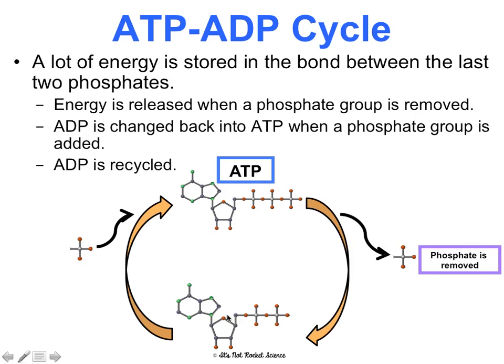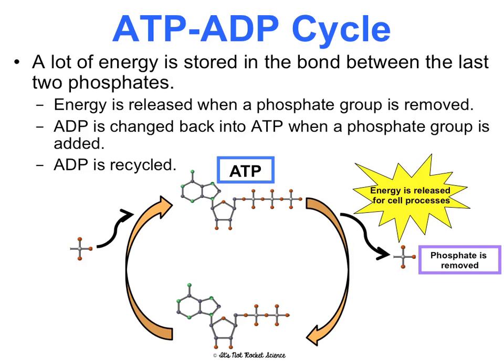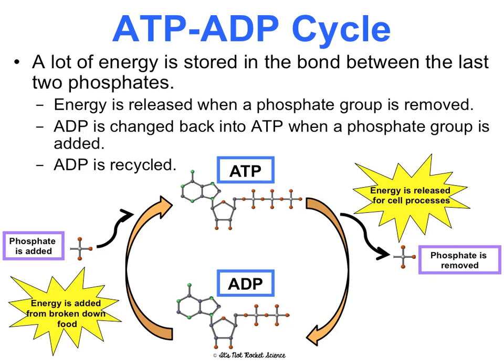So there's your ATP. A phosphate is removed and energy is released for cell processes like cell division or active transport. That forms ADP, and then to reform ATP, we add a phosphate and energy from broken-down food.